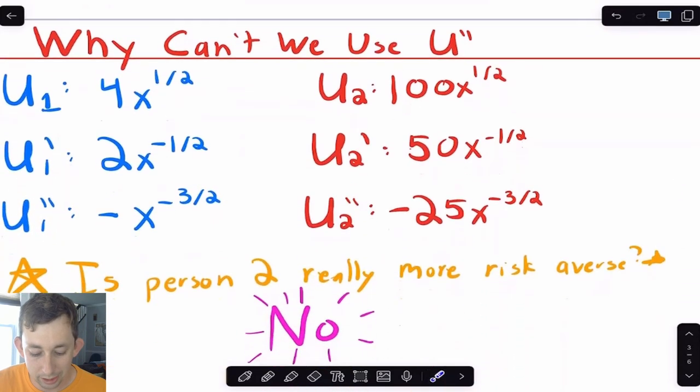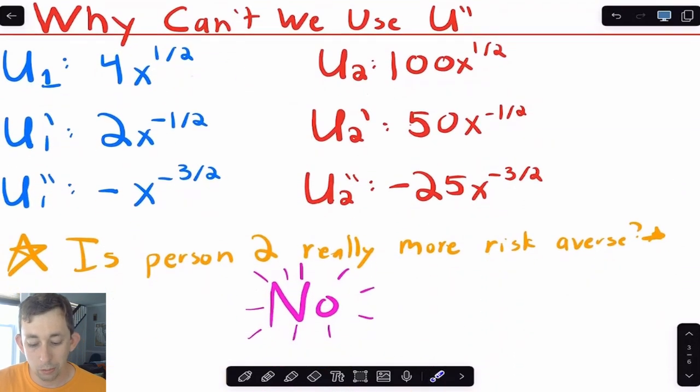And so unsurprisingly, you might think, well, we should just use the second derivative of the utility function. And I want to show you why we can't actually just use the second derivative. That's going to be the basis for this measure, but we can't just use the second derivative, and here's why.